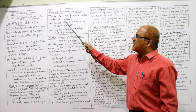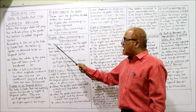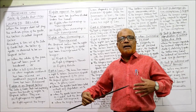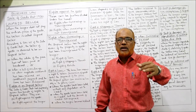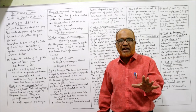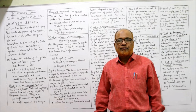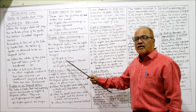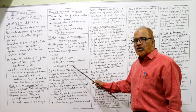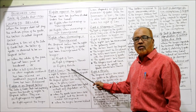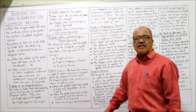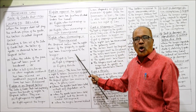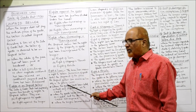Rights when ownership is transferred: even if the property in goods has been transferred to the buyer, the unpaid seller still has three rights. These three rights are: right of lien, right of stoppage in transit, and right of resale.